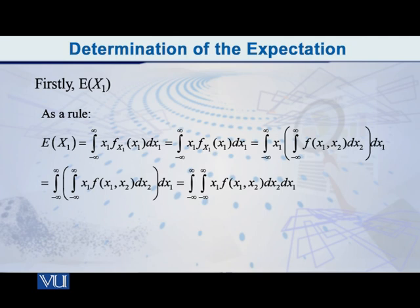then you don't have to do those two steps, first finding the marginal and then doing it on that. You can do it straight from the joint pdf.